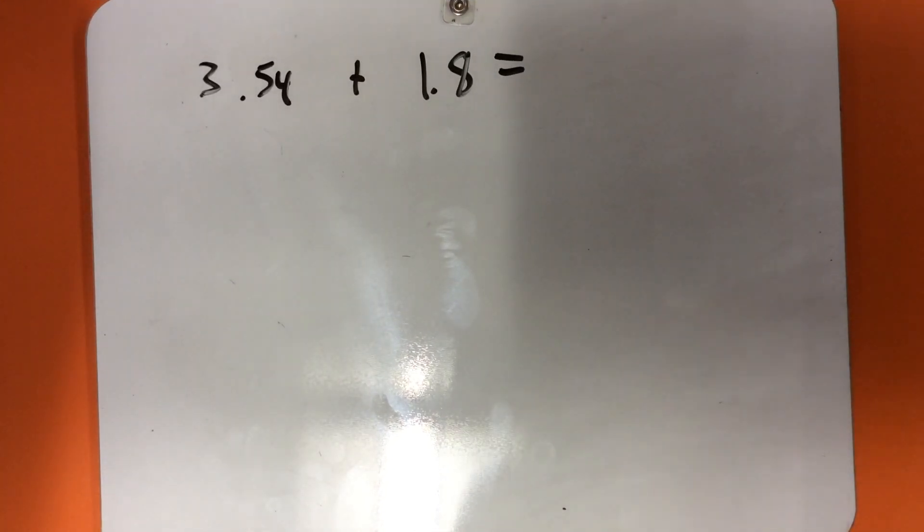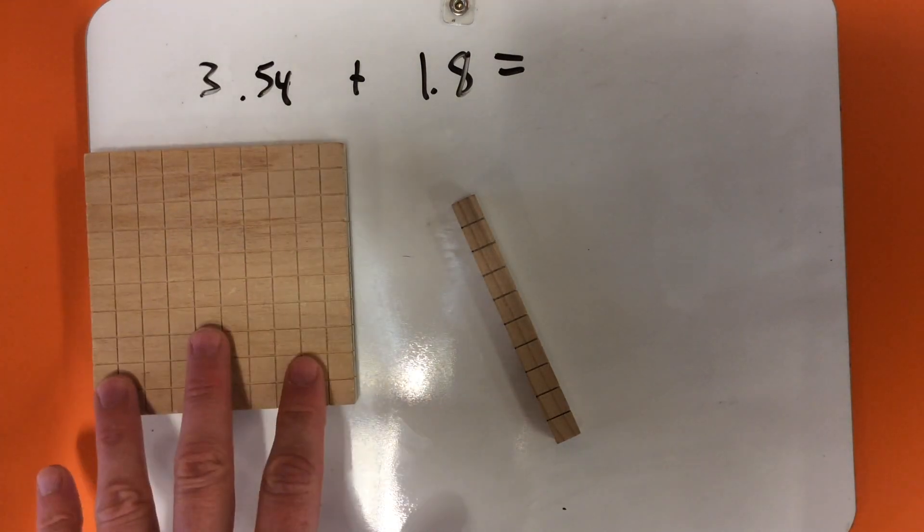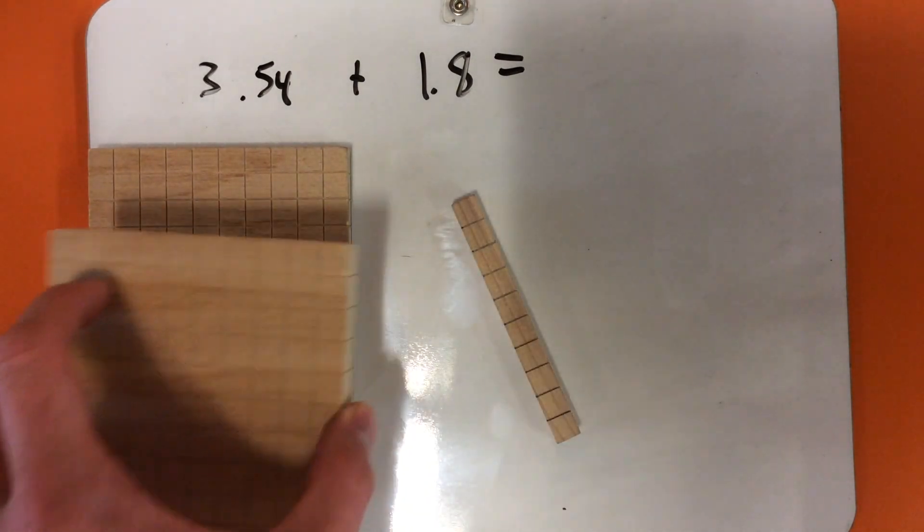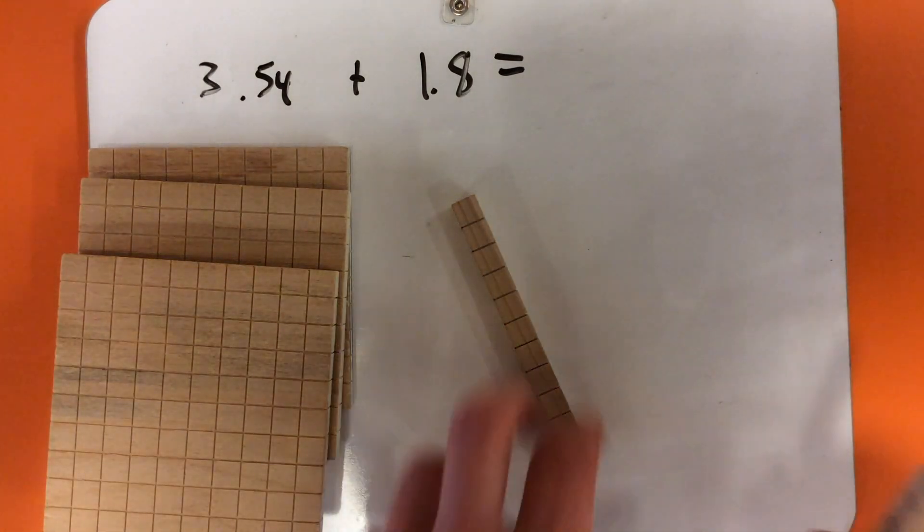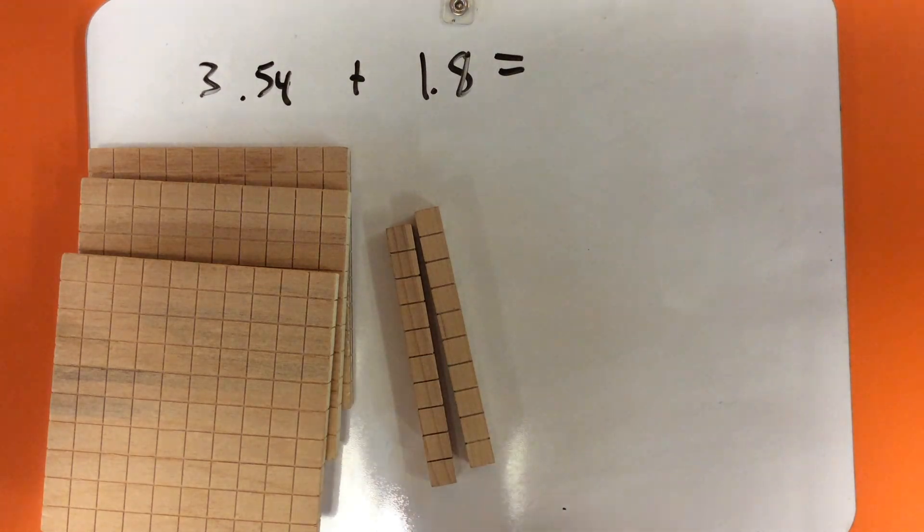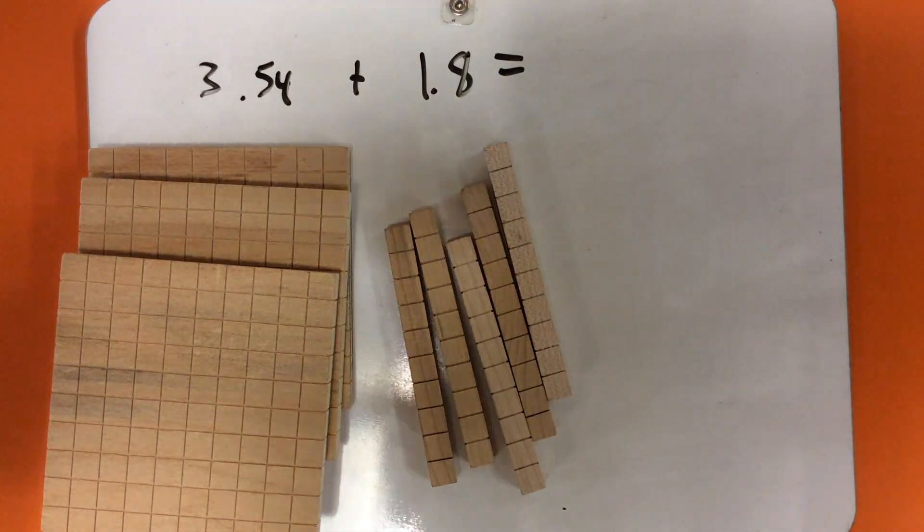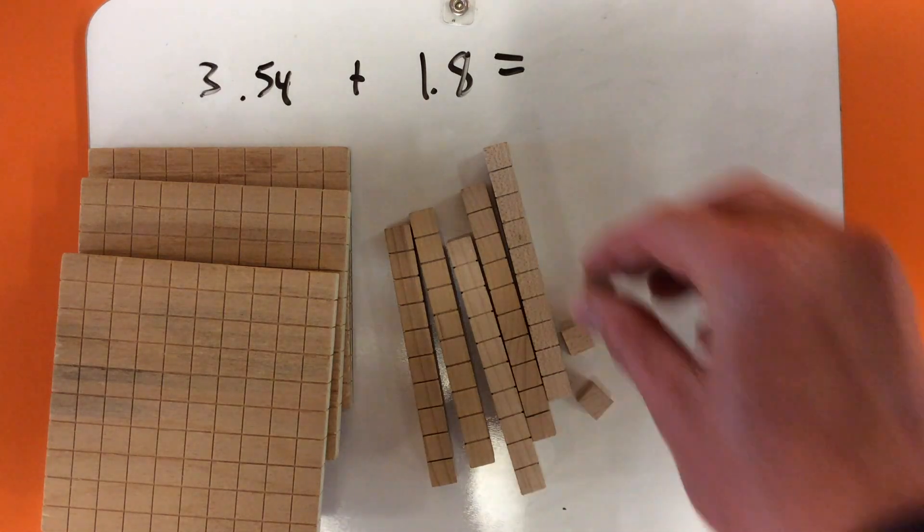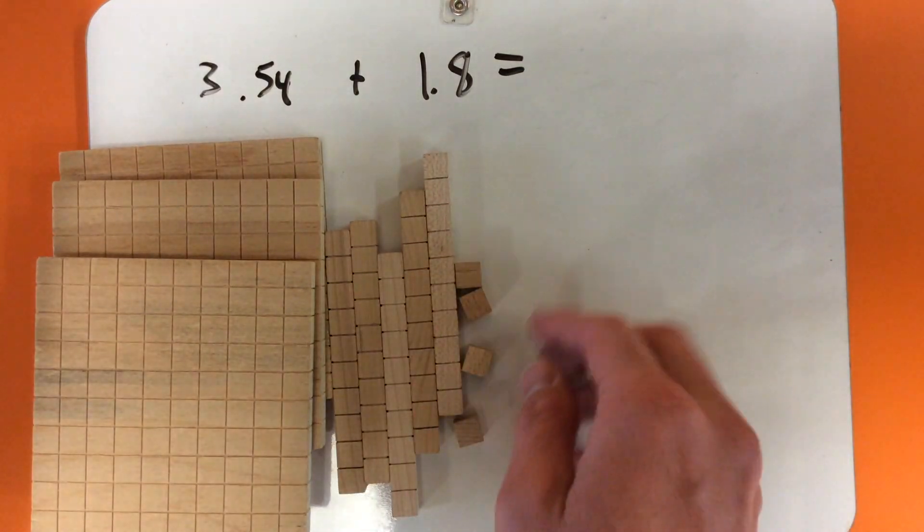For this problem, I'm going to need to be a bit creative. Instead of using my tenths pieces as one, I'm going to use the hundred squares as one. So to make 3.54, it's 1, 2, 3 whole squares, then 5 tenths: 1, 2, 3, 4, 5, and we need 4 hundredths: 1, 2, 3, 4 hundredths. I'm going to put those off to the side.